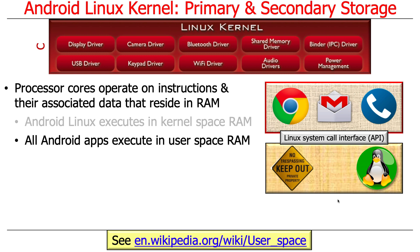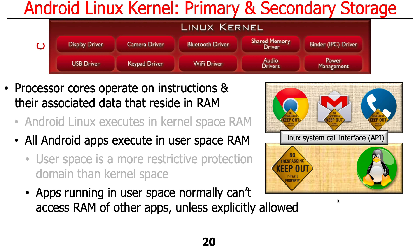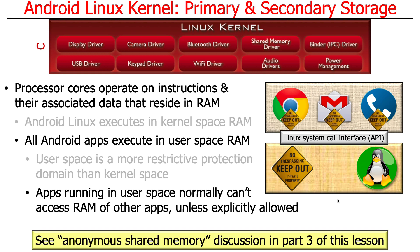Android apps, in contrast to the Android Linux kernel, execute in user space RAM — your browser, email, phone — all these apps execute in user space and make system calls. Not usually the apps themselves, but the things they call, which access the hardware abstraction layer and virtual machine, are what ultimately make calls into the kernel. User space is more restrictive than kernel space by design. If you have multiple apps running in user space in separate processes, they can't access each other's memory unless you explicitly use features like shared memory, which requires additional work.